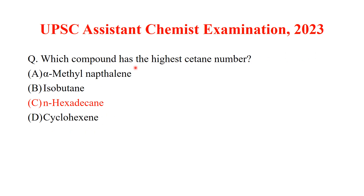Which compound has the highest cetane number? Octane number and cetane number are inversely related. N-hexadecane, which is also known as cetane, has the highest cetane number, which is 100.